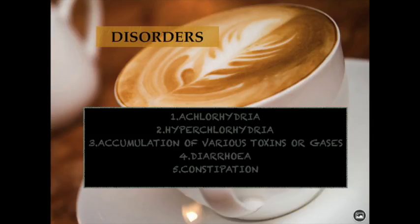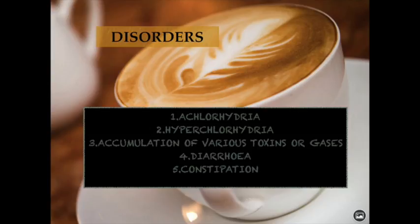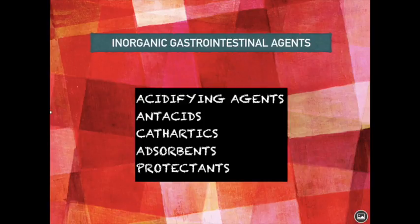Dysfunction of any of the above organs leads to various disorders, including: achlorhydria — decrease or absence of acid secretion; hypochlorhydria — excessive secretion of acid which leads to ulcer formation; accumulation of toxins or gases; diarrhea — improper absorption of fluids into the bloodstream; and constipation — insufficient peristaltic movement or excessive absorption of fluids. The agents used to treat these conditions are termed gastrointestinal agents.